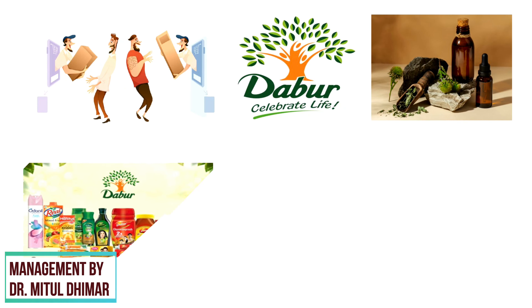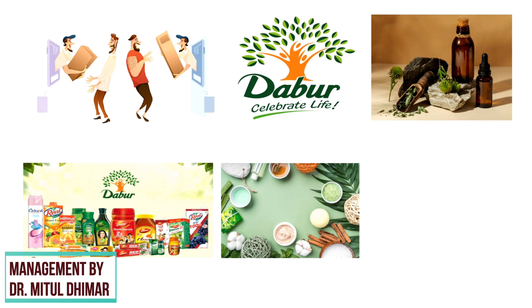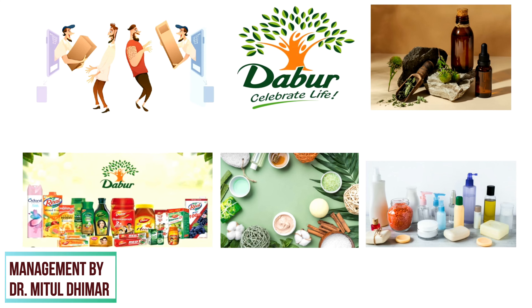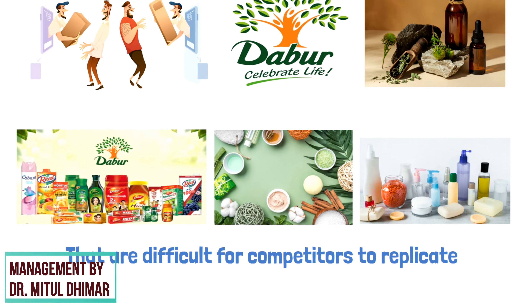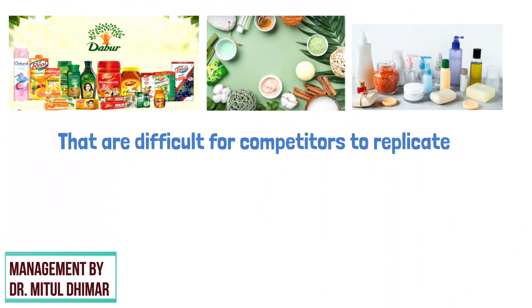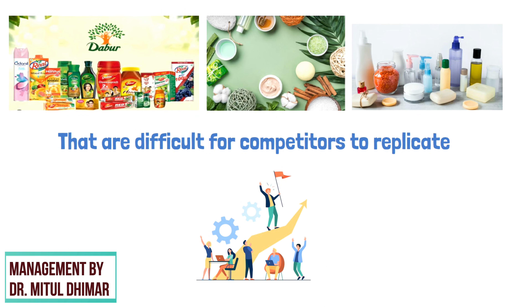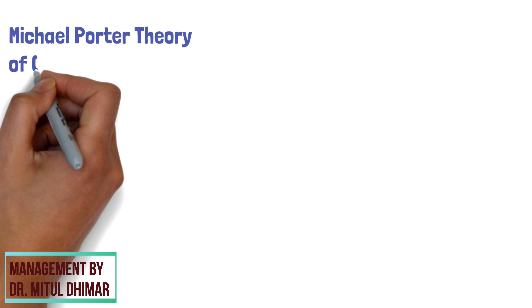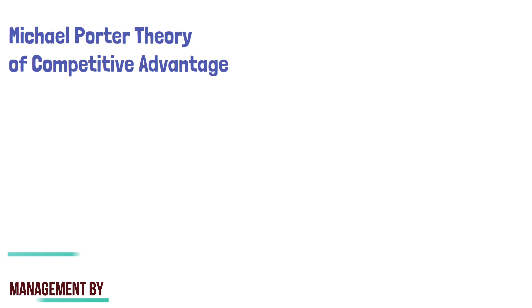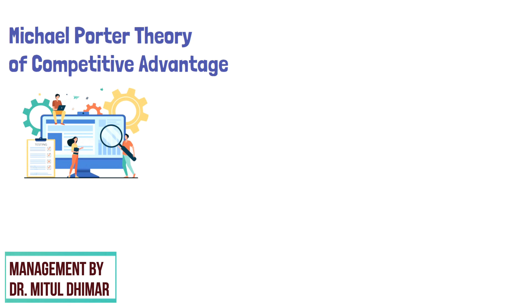For example, Dabur, an Indian FMCG company, has a focus on natural and Ayurvedic products. The company tailors its products to the needs of consumers who prefer natural and herbal products, offering unique products that are difficult for competitors to replicate. This has enabled Dabur to gain a competitive advantage in this market segment.